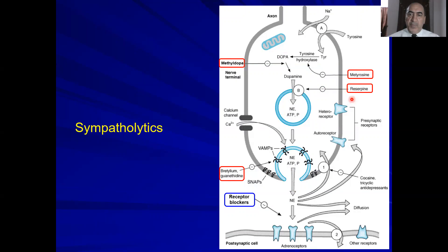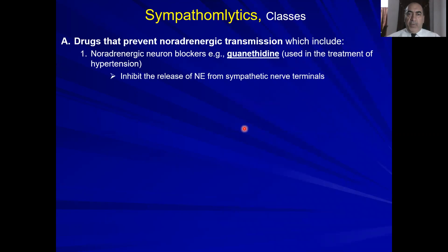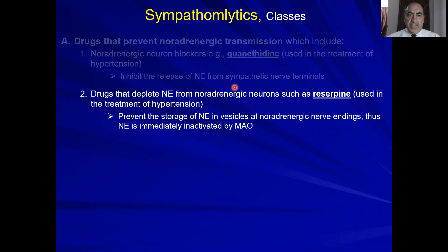All of these drugs are used for the treatment of hypertension. Adrenergic receptor blockers are drugs that block the alpha or beta receptors and prevent adrenaline or norepinephrine from binding to these receptors. Class number one — the norepinephrine transmission blockers — includes drugs that inhibit the release of norepinephrine from the nerve terminals, such as guanethidine and bretylium, and drugs that deplete norepinephrine from nerve terminals, such as reserpine.